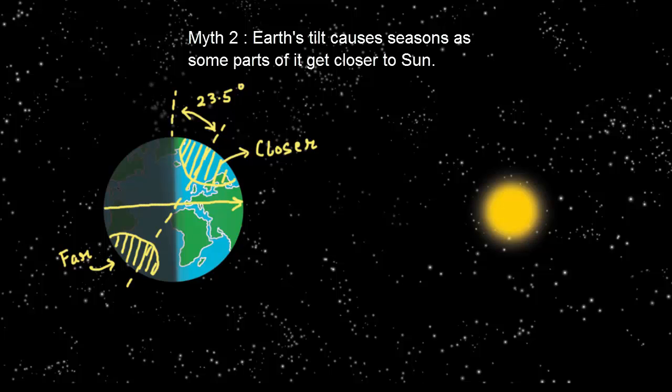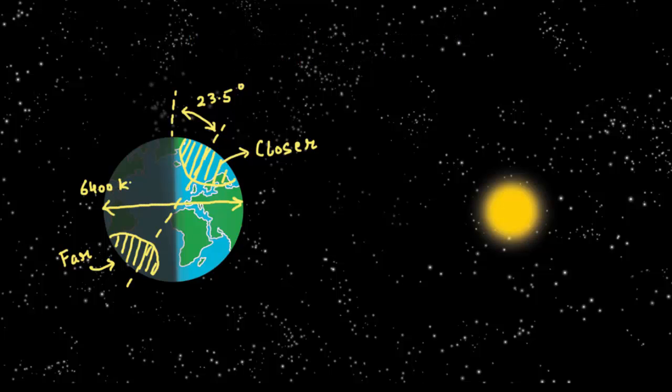For this reasoning, we have to compare Earth's diameter, which is 6400 kilometers, to Earth's sun distance, which is 150 million kilometers.